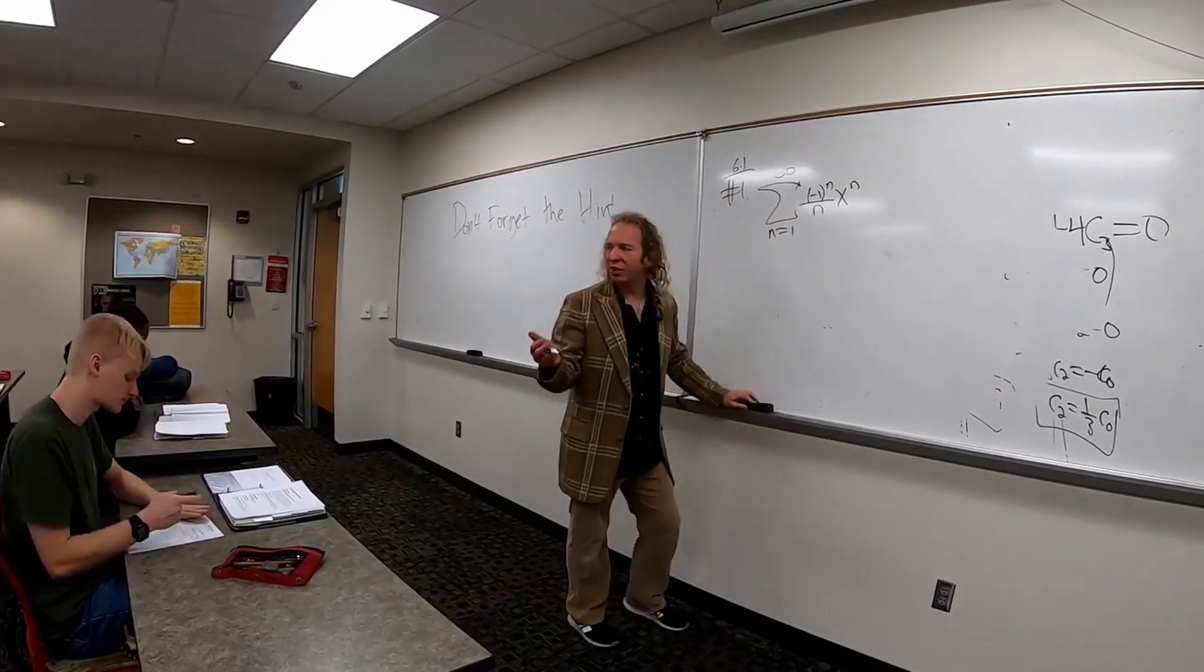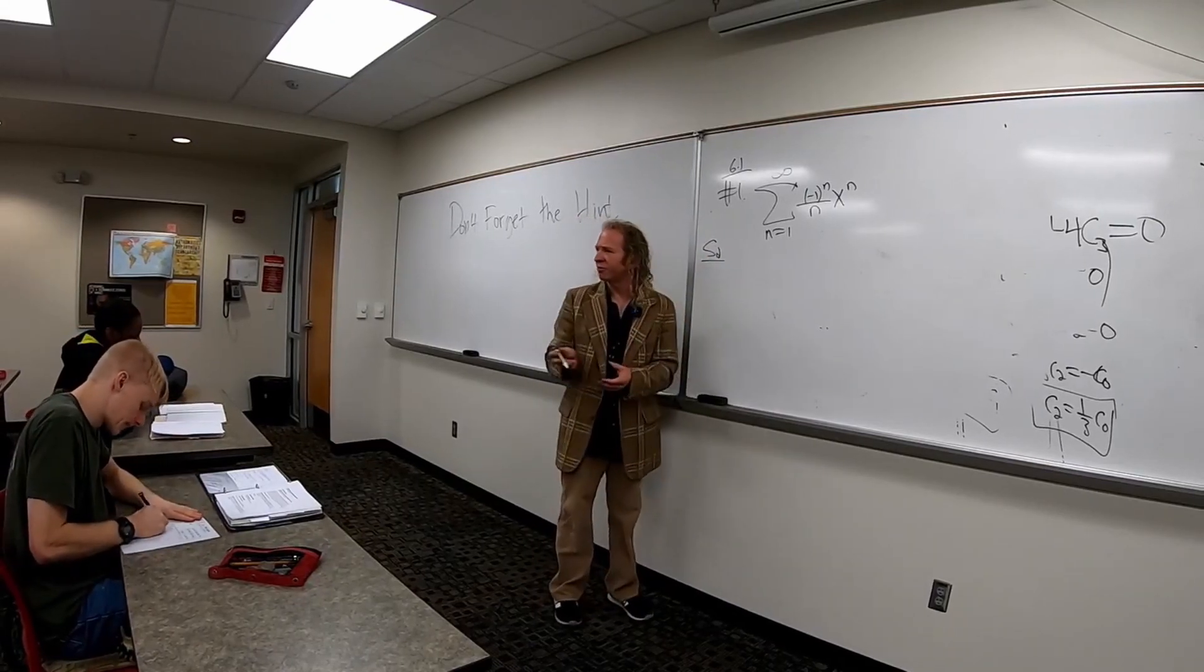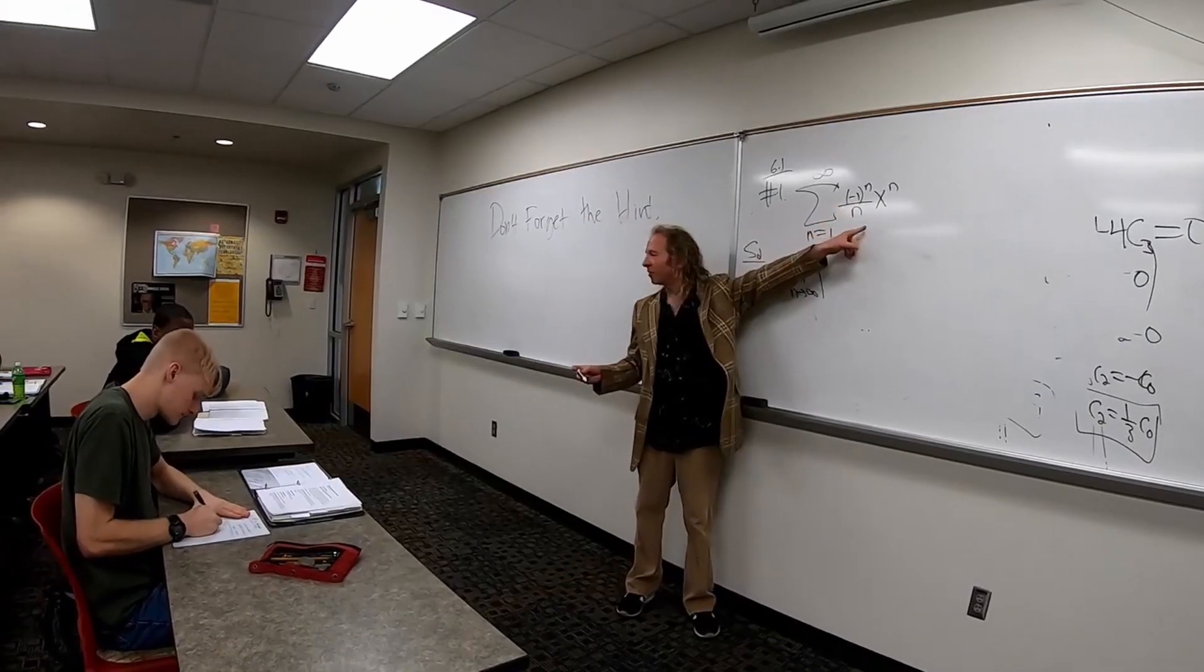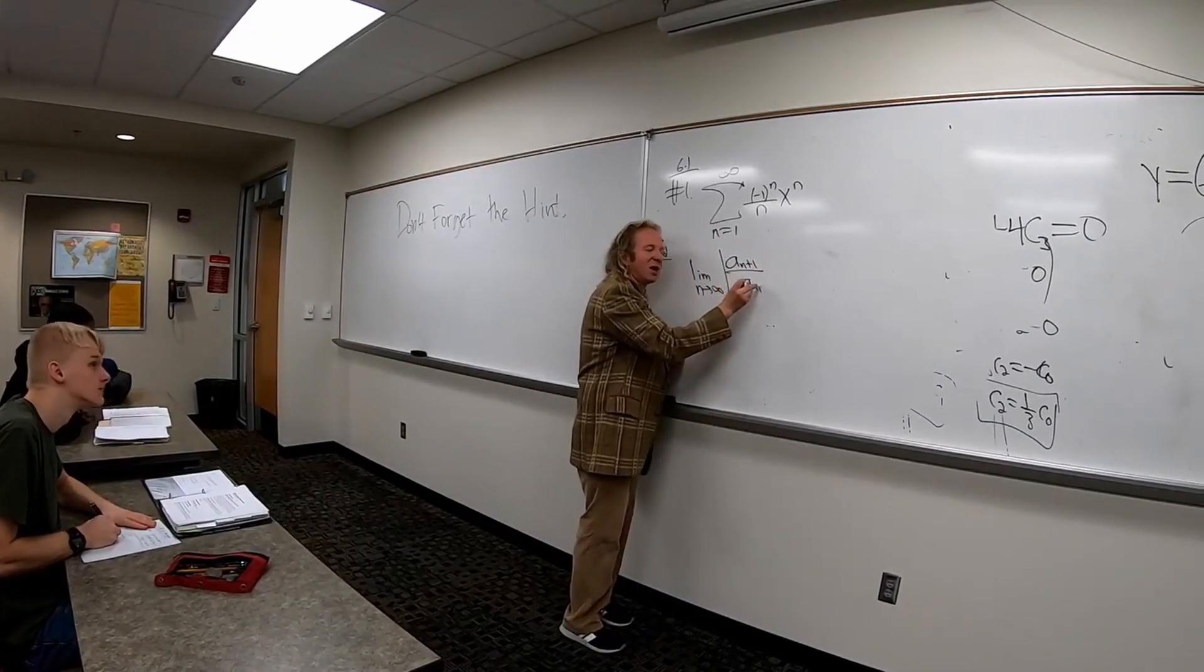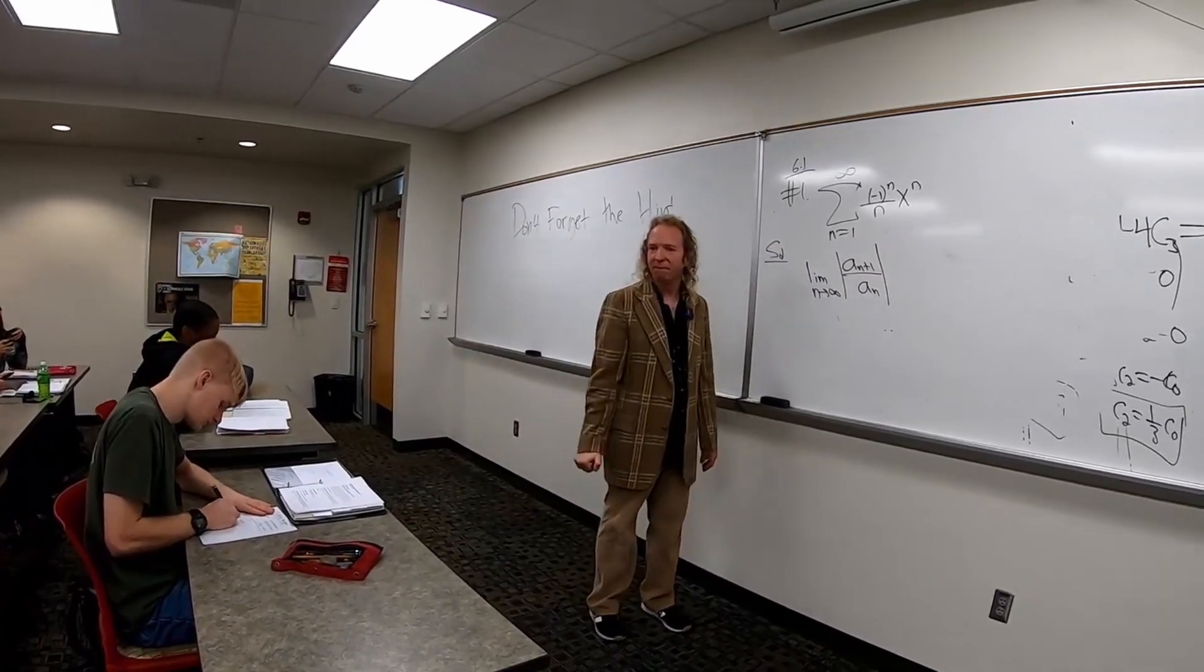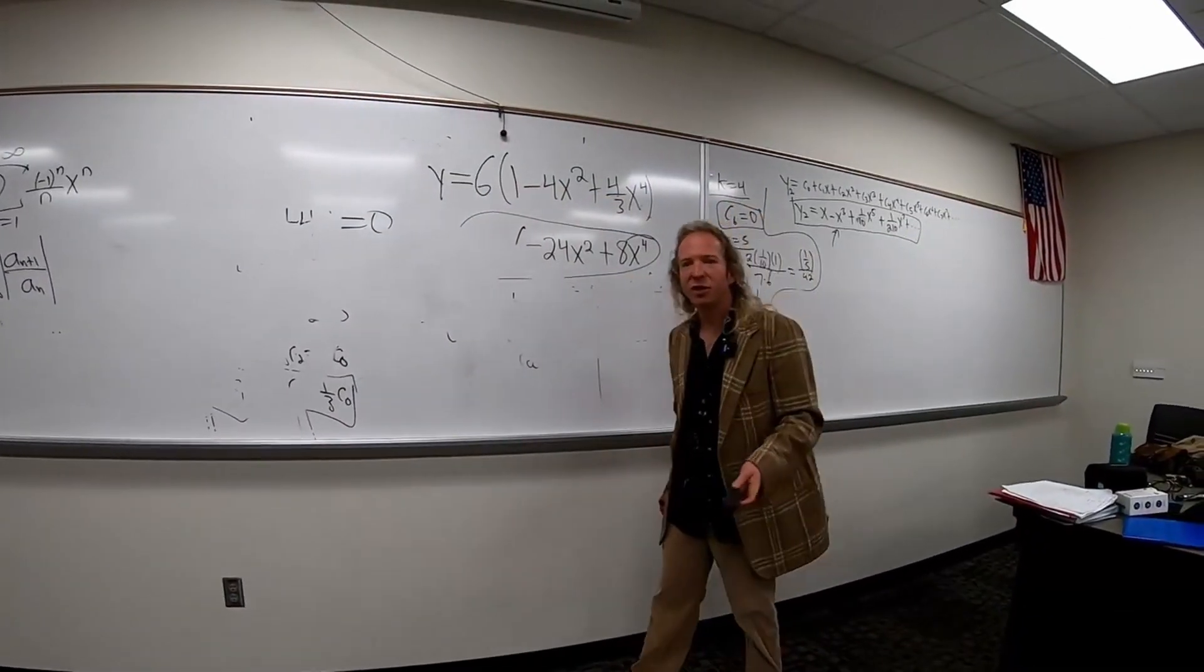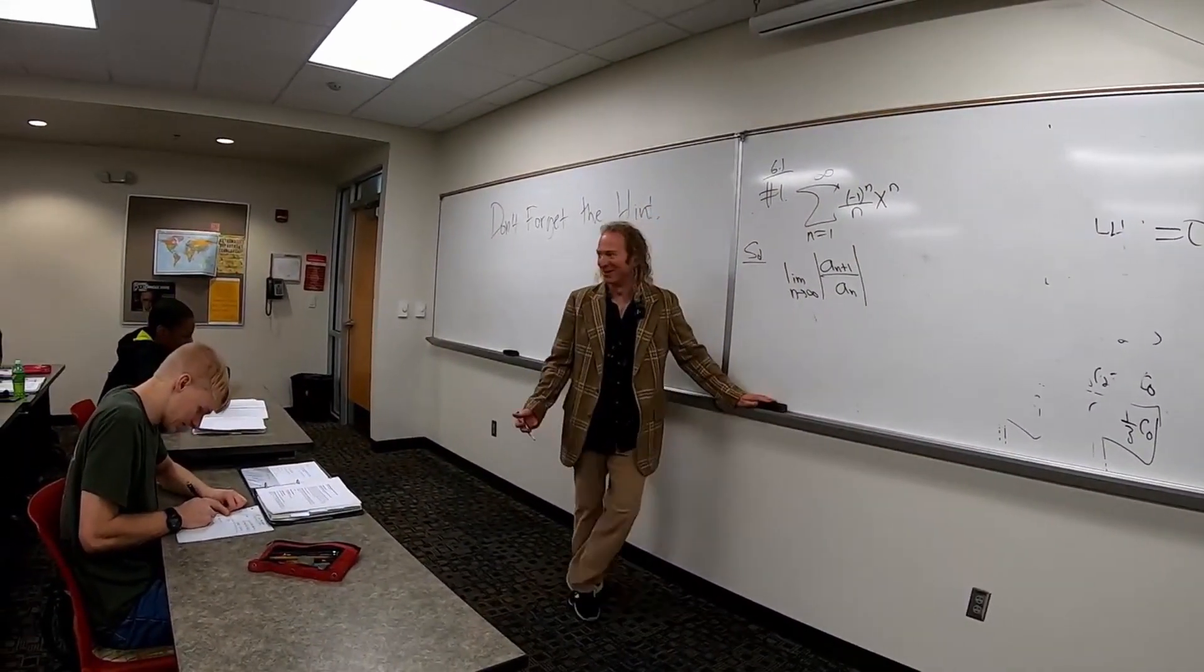So you always start these problems by using the ratio test, right? That's the first step. So let's do it. Because I think we've done all the DEs pretty good. So limit as n goes to infinity. And since it's the ratio test, I'm going to write the test down. There's one in the homework that's geometric, but the chances of it being geometric on your test are like zero. So ratio is the way to go.